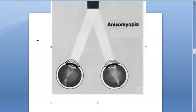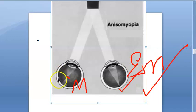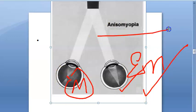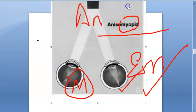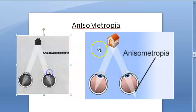Now let us understand what anisometropia is. In this photo, the image here is forming on the retina perfectly, but here it is forming in front of the retina. So this eye is myopic and this eye is emmetropic. This eye is perfectly fine but this eye has myopia — so this is anisomyopia, or anisometropia. This is how the two eyes differ in refractive errors.